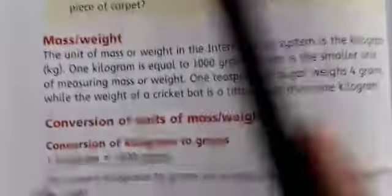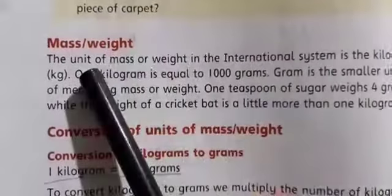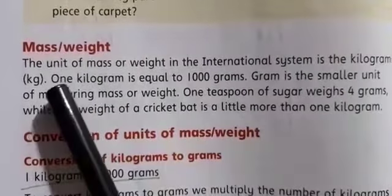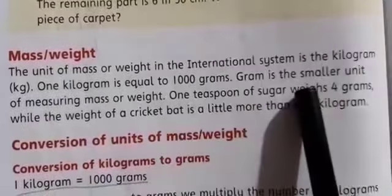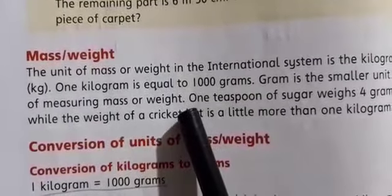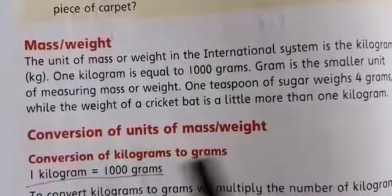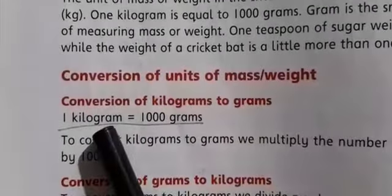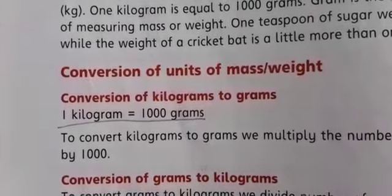You can see here it is written 'mass and weight,' and they are telling us that the unit of mass or weight in the international system is kilogram (kg). One kilogram is equal to one thousand grams. Gram is the smaller unit of measuring mass or weight. For example, one teaspoon of sugar weighs four grams. They have told us two units: kilograms and grams.